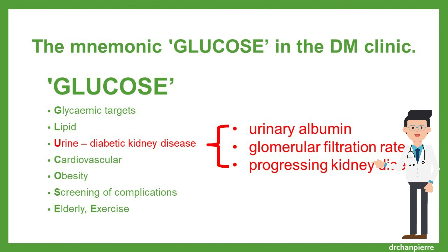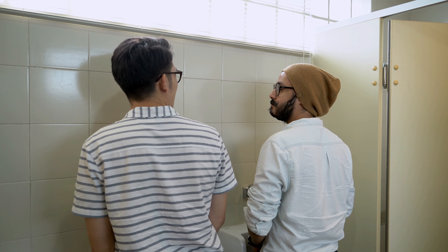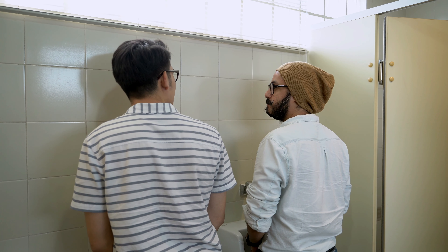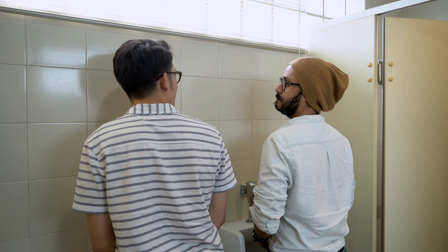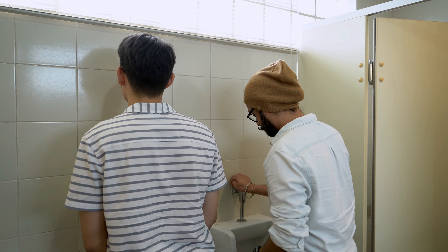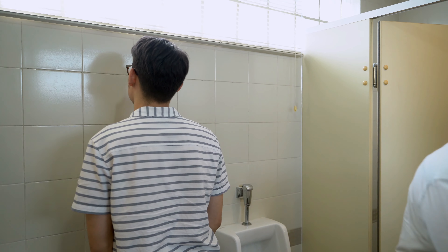U is for urine, covering any diabetic kidney disease. Apart from urine albumin, we also look at the blood test for estimated glomerular filtration rate and whether there is any progressing kidney disease.